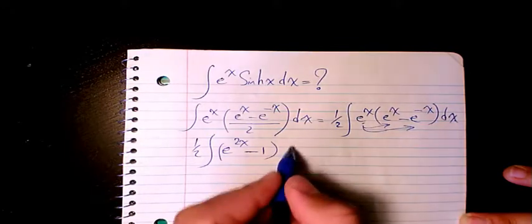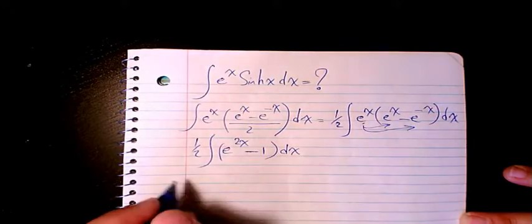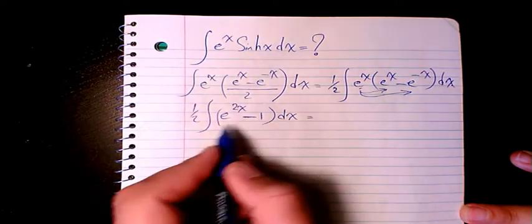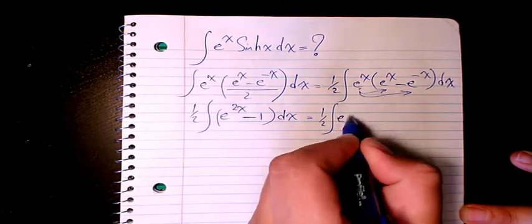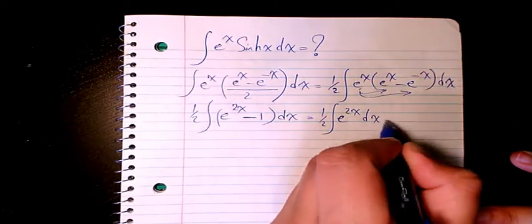So now I separate it: e to the power of 2x dx minus 1 over 2 dx.